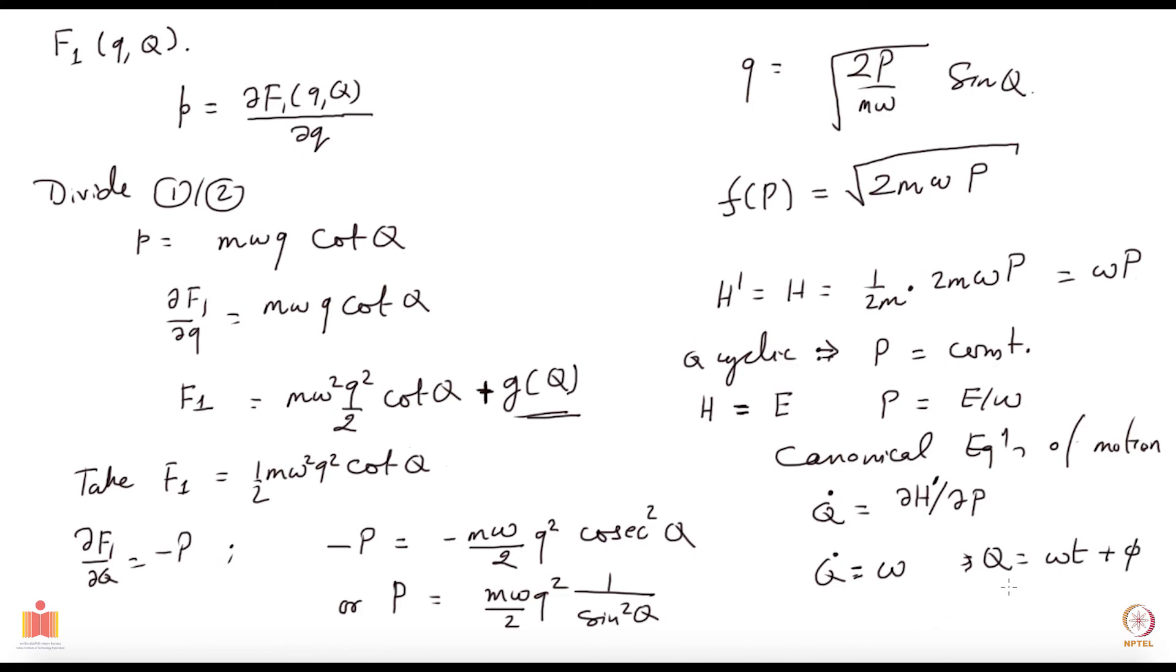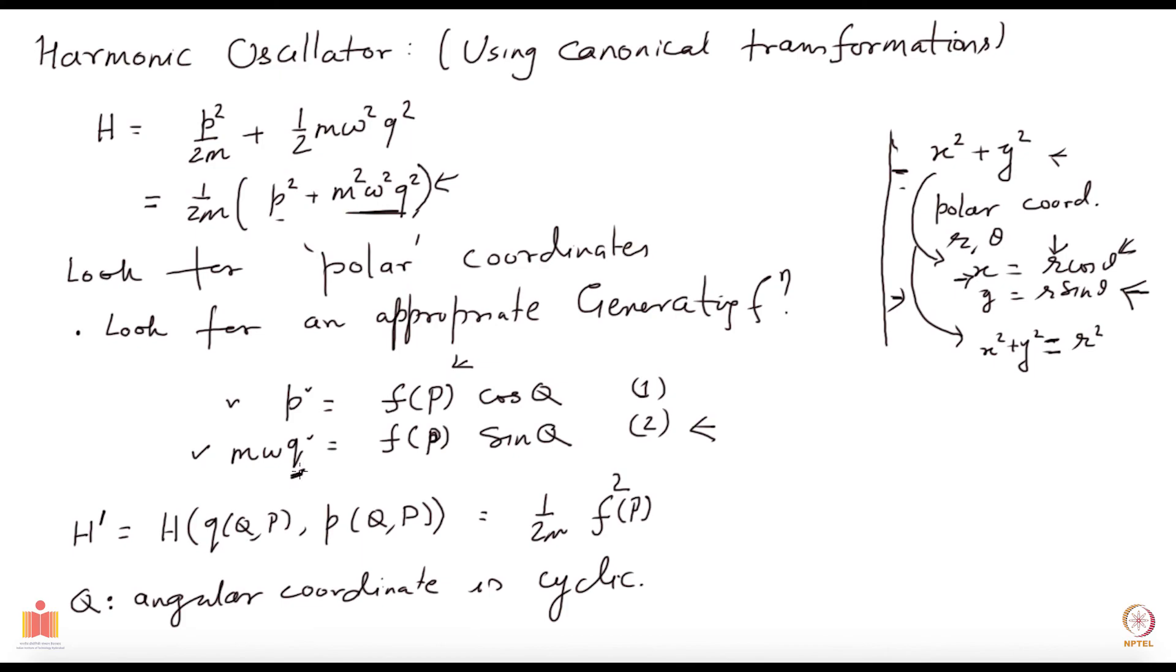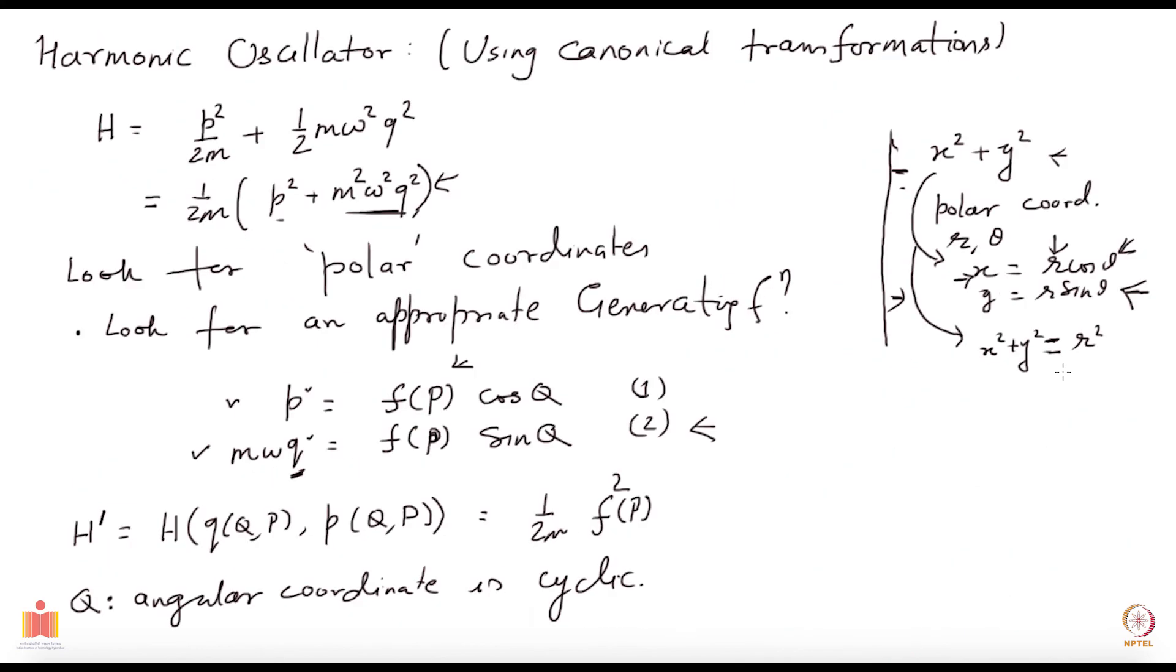I can immediately solve it, and I get capital Q equals omega t plus some constant phi. And if you insert this back into the relation here, you will find the small q will be square root of 2E over m omega times sin of omega t plus phi. That is the solution which we are very familiar with, but we have also derived it now using the canonical transformations.